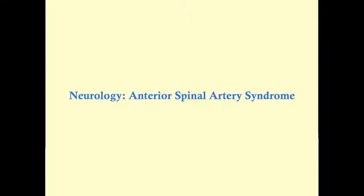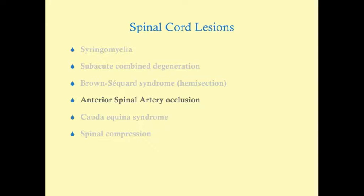Hello everybody. We're going to talk about anterior spinal artery occlusion — this could also be called anterior spinal artery stroke, because this is a stroke, a vascular disease resulting in ischemia to the nerves. This is part of a series on spinal cord lesions including syringomyelia, subacute combined degeneration, Brown-Séquard, ASA occlusion, cauda equina syndrome, and spinal compression.